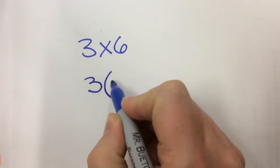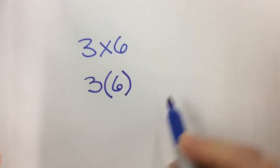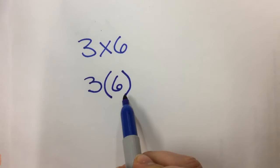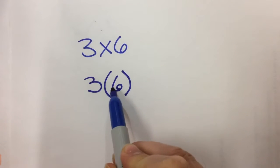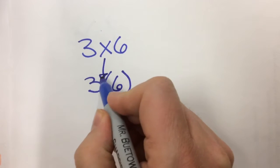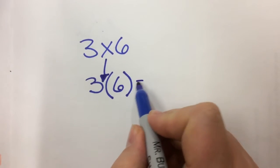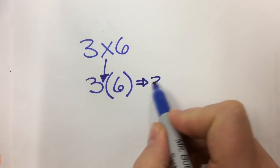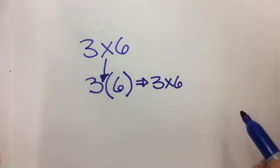A lot of times you're going to start seeing problems written like this. Now I have the 3 here and I have the 6 inside of the parentheses. Whenever I put two numbers next to each other like this, one in parentheses and one outside of the parentheses, there's a hidden symbol in here, and that hidden symbol is the multiplication symbol. So this really means 3 times 6.